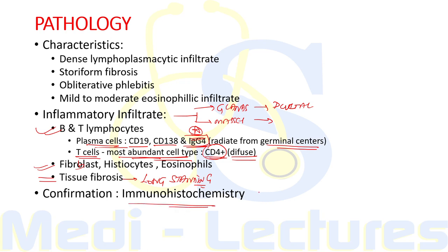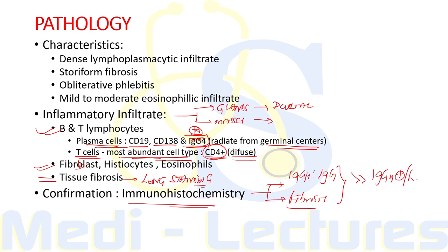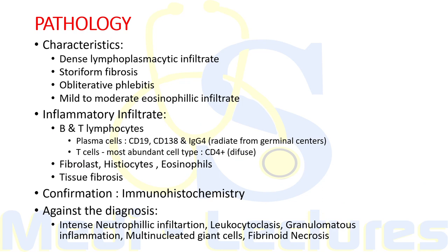For confirmation, immunohistochemistry is performed with IgG4 staining. We assess the ratio of IgG4 to IgG and fibrosis — if both features are present, these are a better marker compared to IgG4-positive cells per high power field alone. It is important to keep in mind that certain features are against the diagnosis of IgG4 related disease, including intense neutrophilic infiltration and leukocytoclastic vasculitis.